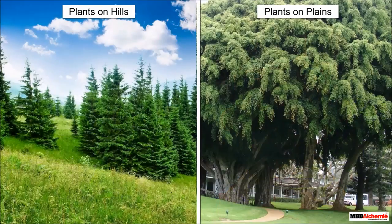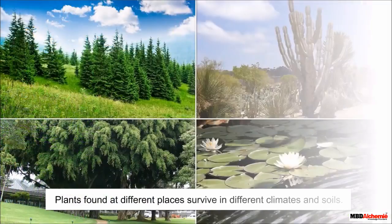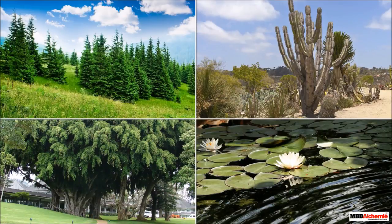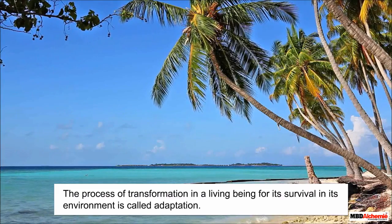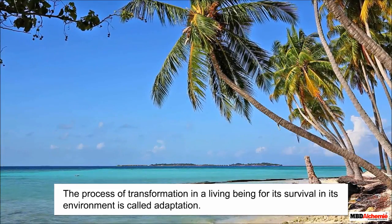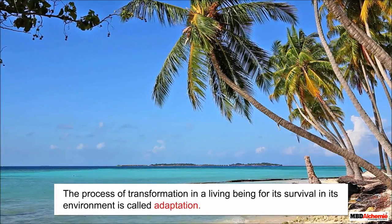Kids, have you ever wondered the same? Let us find out why the plants on hills are different from those on plains. Plants found at different places survive in different climates and soils. They transform themselves to survive in their unique surroundings. This process of transformation in a living being for its survival in its environment is called adaptation.